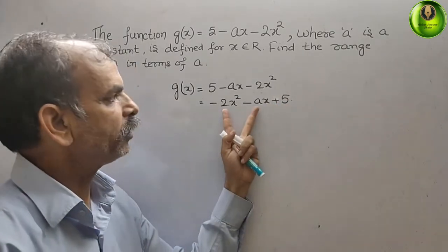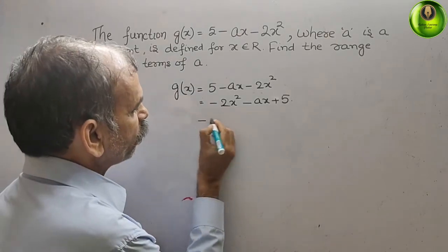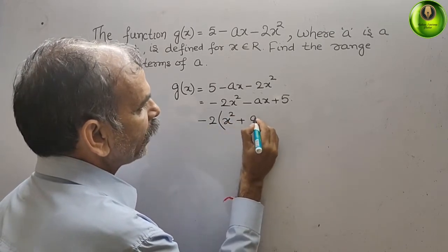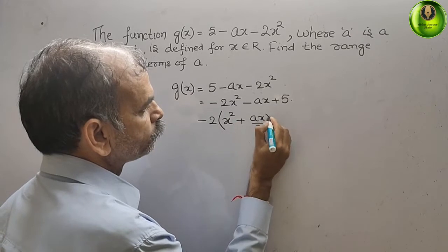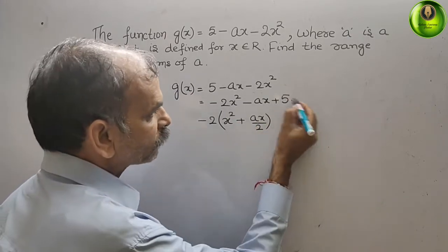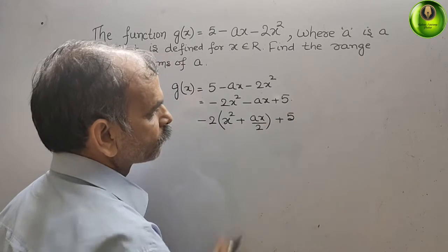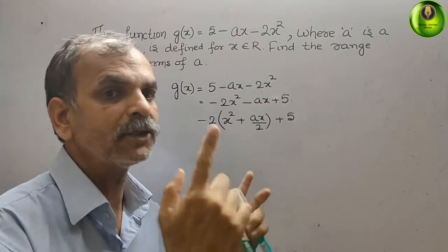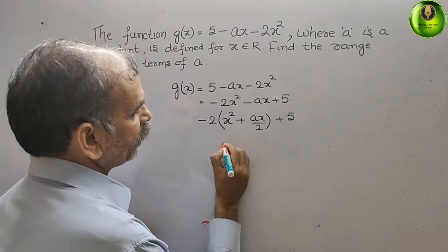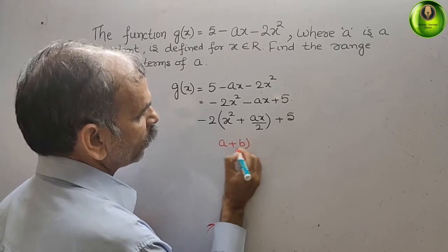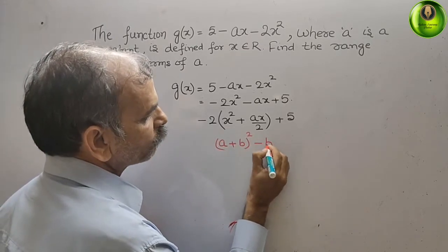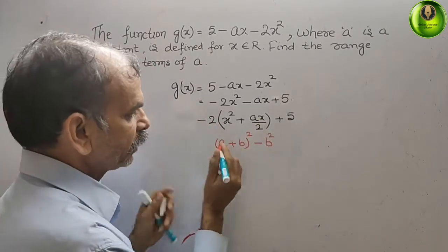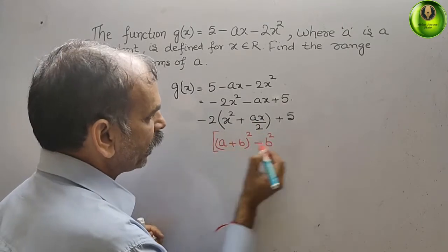Now we will take minus 2 as common in the first two terms: minus 2 times (x squared plus ax/2), plus φ. Now we will form a plus b whole square. Here it will be (a + b)² minus b², and you can see minus 2 is outside, so we will put a big bracket here.